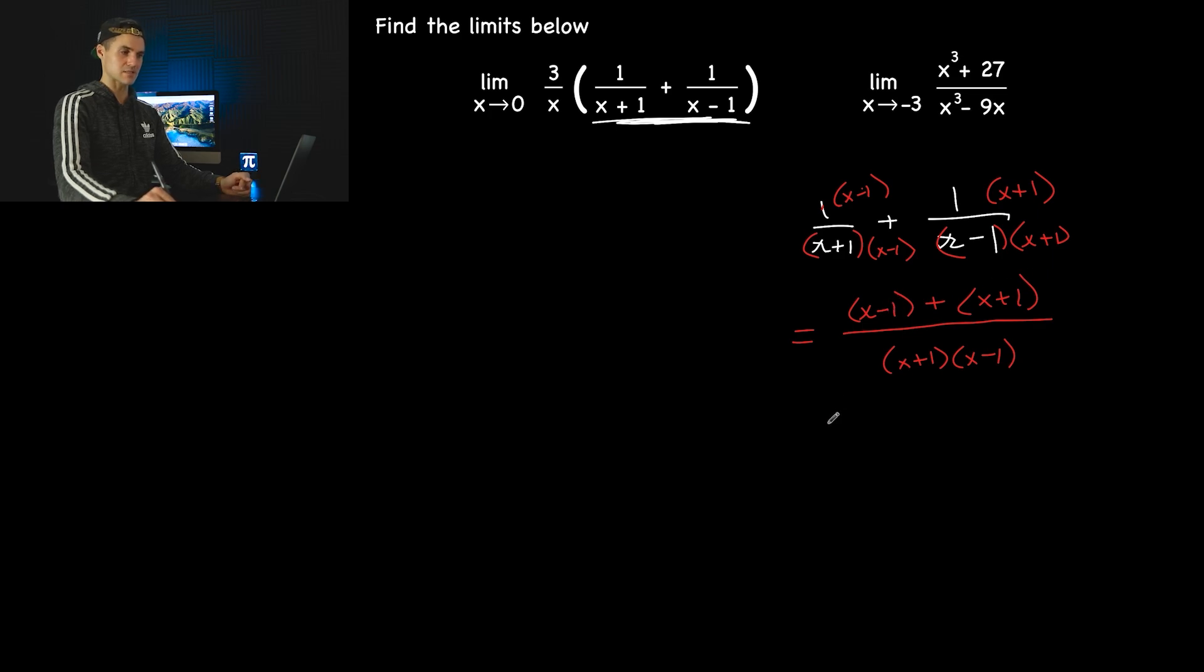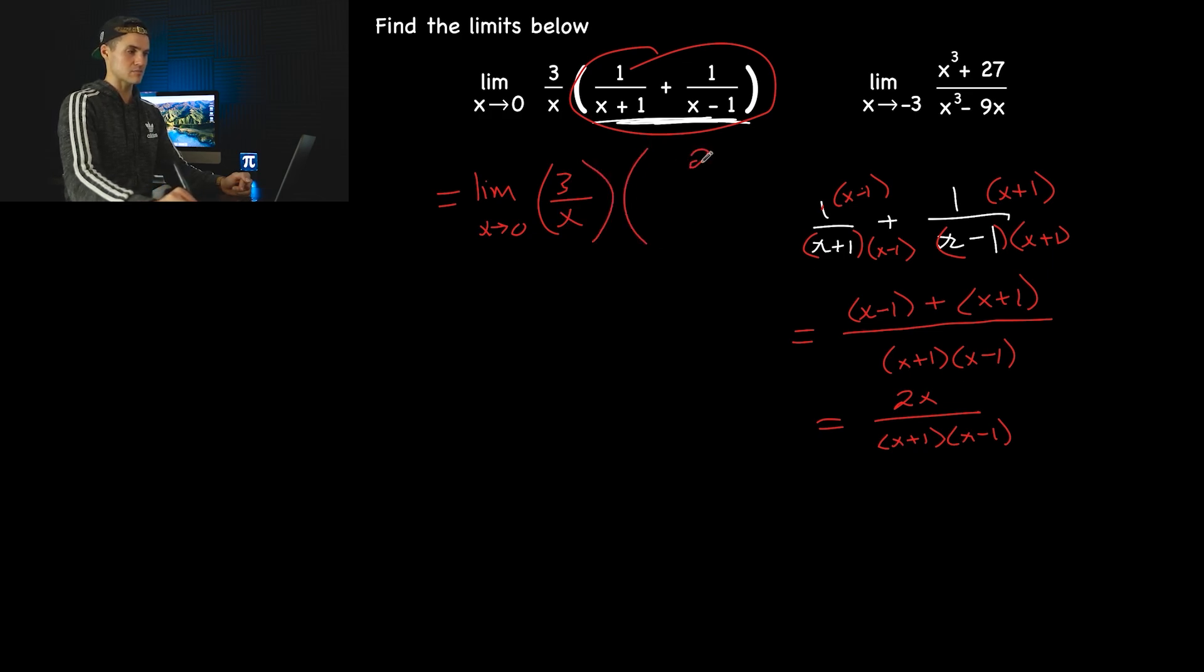The negative 1 and positive 1 cancel out. We end up with 2x over x plus 1, x minus 1. So this entire expression, let's go back to the main limit. We've got the limit as x approaches 0, we got 3 over x, and then over here this entire bracket simplified to 2x over x plus 1, x minus 1. Notice the x's cancel out. So we end up with the limit as x approaches 0, 3 times 2, which is 6 over x plus 1, x minus 1.